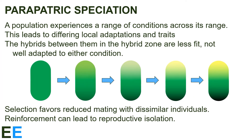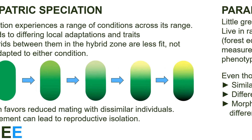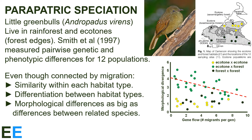Our third speciation process is parapatric speciation. In this scenario, a population experiences a range of conditions across its distribution, leading to differing local adaptations and traits. This is illustrated in the figure by one end of the distribution adapting to become dark while the other is light. While each end may be well adapted to one set of conditions, the hybrids between them in the hybrid zone may be less fit because they're not well adapted to either condition. If that occurs, selection favors reduced mating with dissimilar individuals, and reinforcement can lead to reproductive isolation. It can be hard to demonstrate parapatric speciation since there is still some gene flow, but there are some examples.